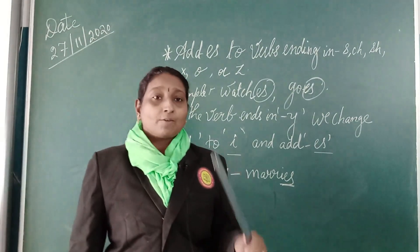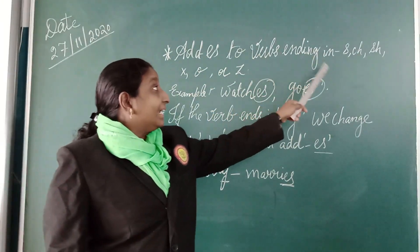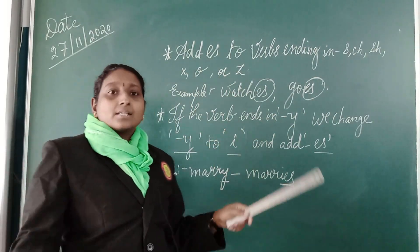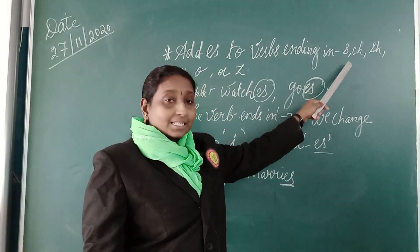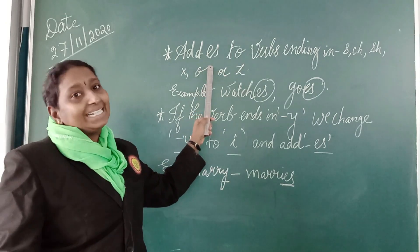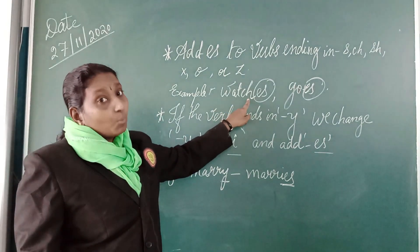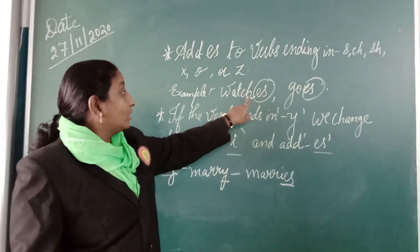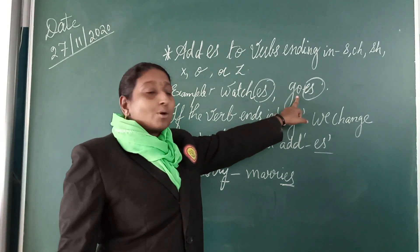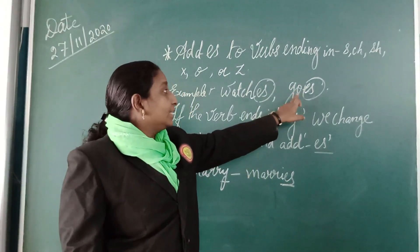The next important rule is: add E-S to verbs ending in S, C, H, S-H, X, O, or Z. Whatever verb ends with those letters, you add E-S. For example, 'watch' ends in C-H, so you add E-S to get 'watches.' Similarly, the word 'go' ends in O, so you add E-S to get G-O-E-S — 'goes.'